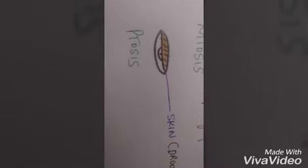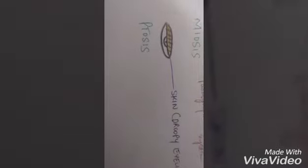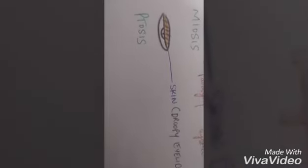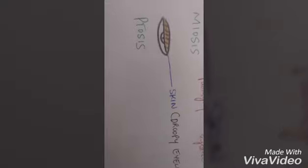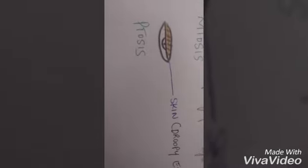And last but not least, ptosis. This is normal - there will be normal pupil. The pupil is normal except that there is droopy eyelid. The skin will droop over the pupil.